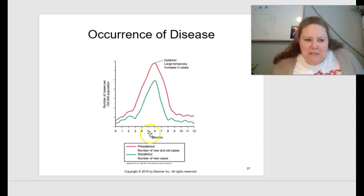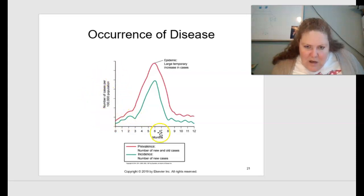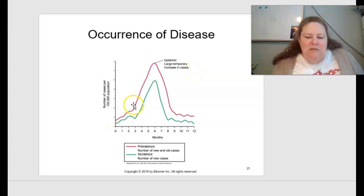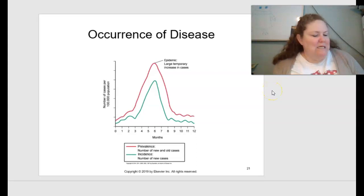Looking at a figure: prevalence — shown in red — is the number of new and old cases, while incidence — in green — is the number of new cases. When cases peak over a month, this can indicate an epidemic — a large temporary increase. Cases slowly build, peak, then hopefully decline. Unfortunately with COVID-19 we've seen it peak, drop, then peak higher, repeatedly, and we're still trying to get things under control.